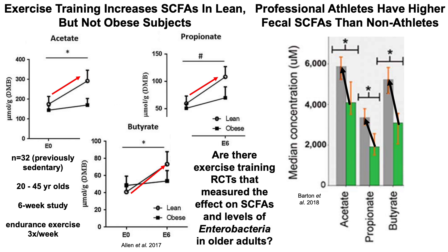With this in mind, are there exercise training RCTs that have measured the effect on short-chain fatty acids and levels of enterobacteria in older adults — older than 60? Unfortunately, there are no studies yet. A study was recently published looking at short-chain fatty acid levels and exercise training in a group approaching 60, but in terms of using exercise training or even a high-soluble fiber diet in people older than 60, with the goal of reducing enterobacteria levels, no studies have been conducted as far as is known.